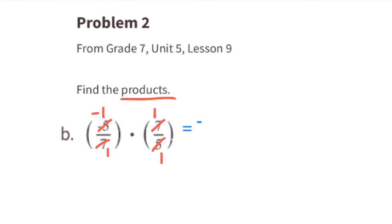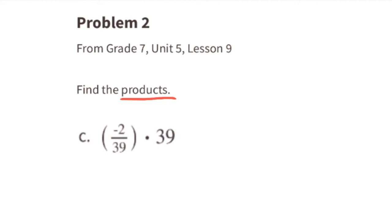We can cross-cancel, and this leaves us with negative one times one over one times one. Negative one over one is the same as negative one divided by one, which is equal to negative one. Part c: negative two over 39 times 39. This is a negative times a positive, which is equal to a negative. We can cross-cancel; 39 goes into 39 once. We're left with negative two over one, which equals negative two.